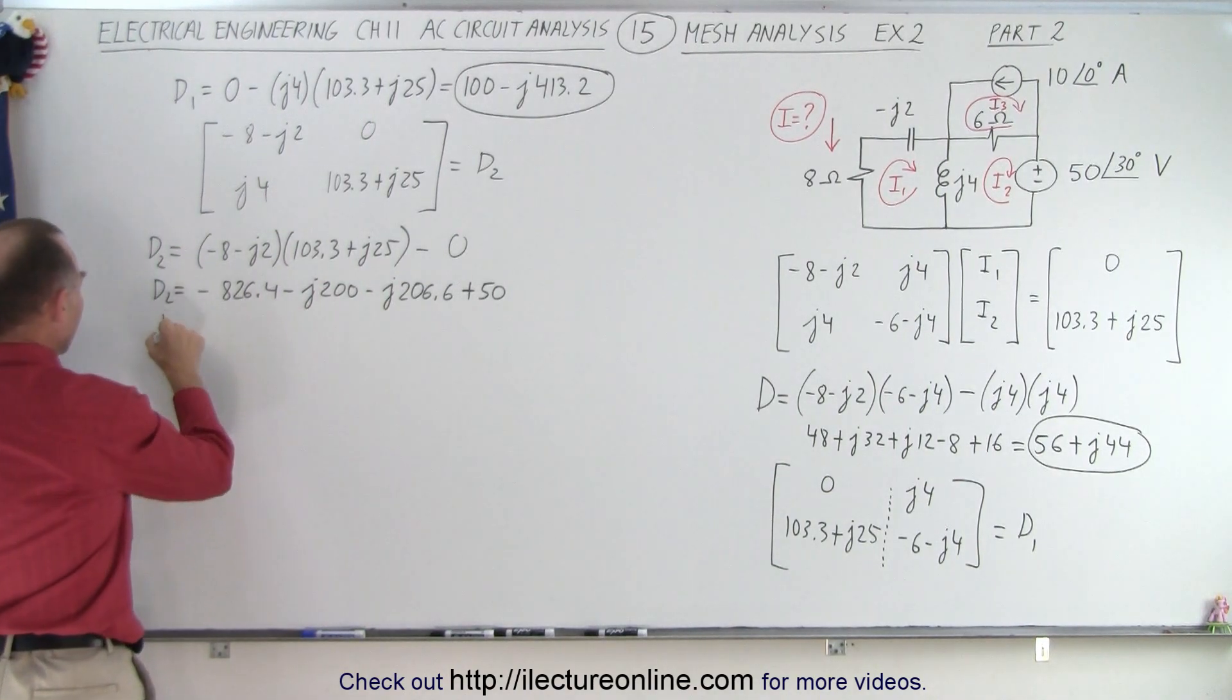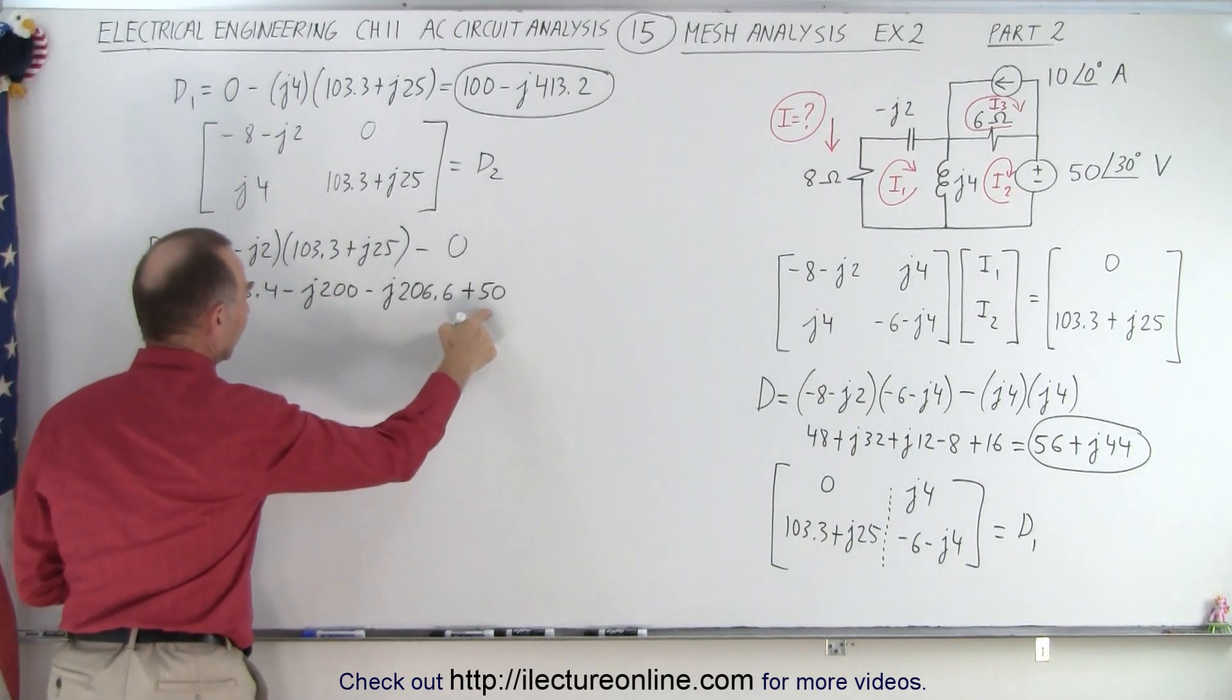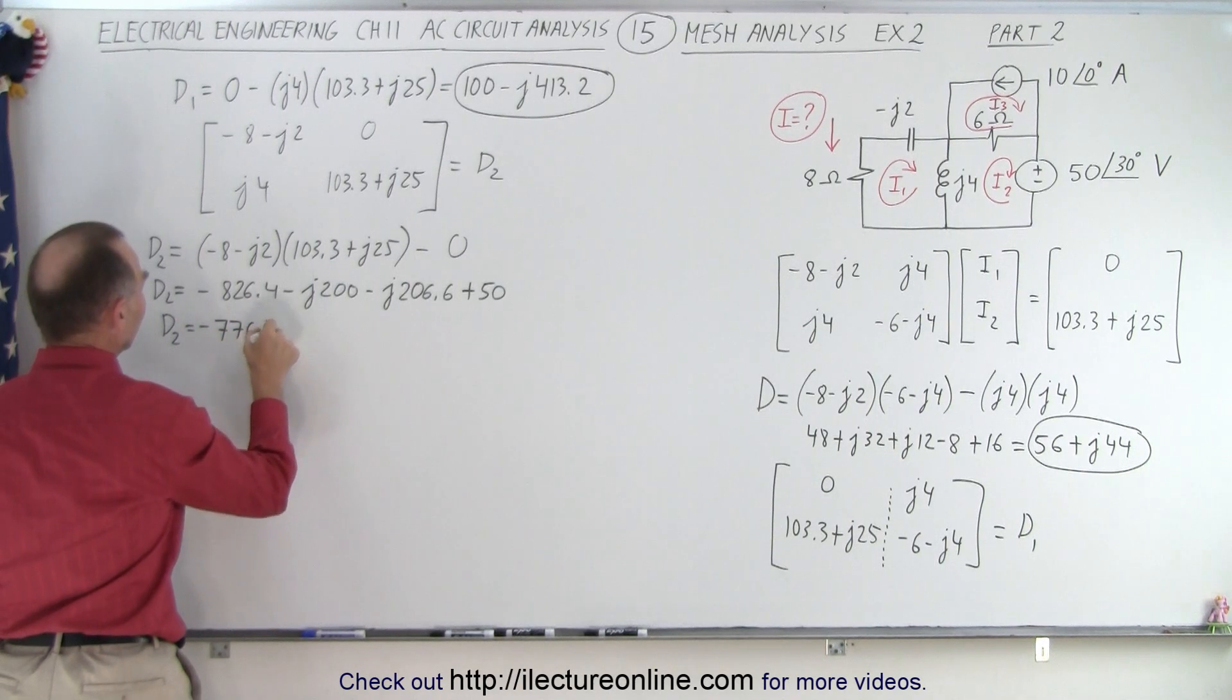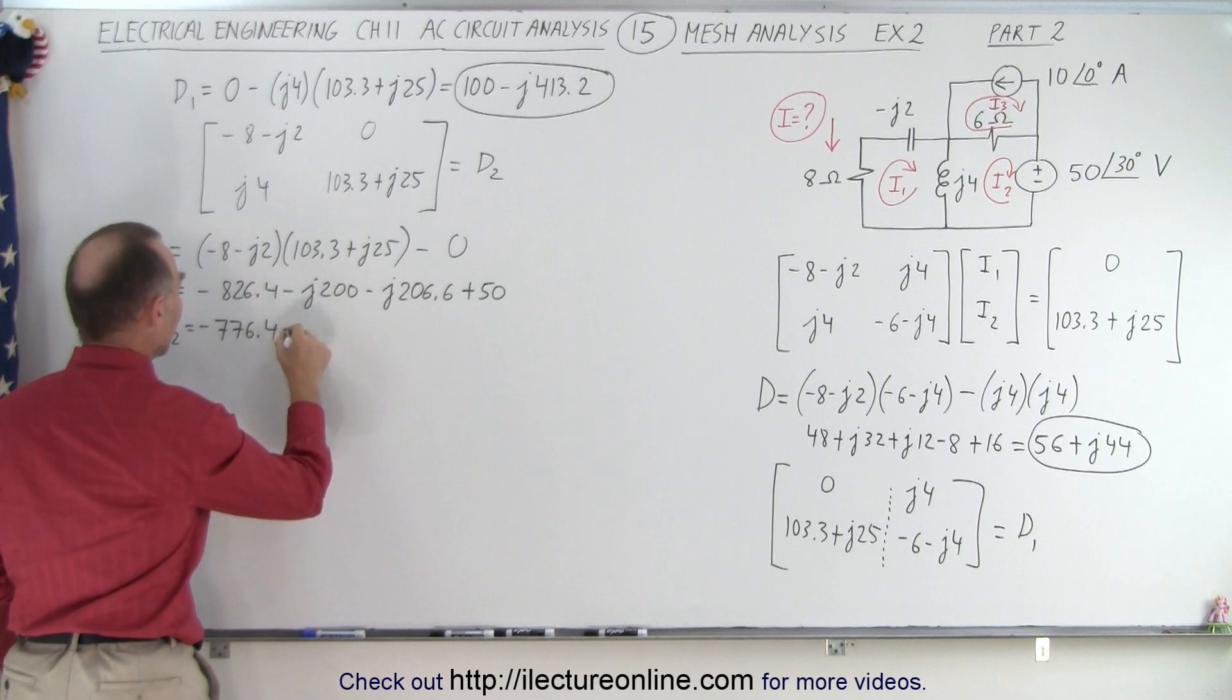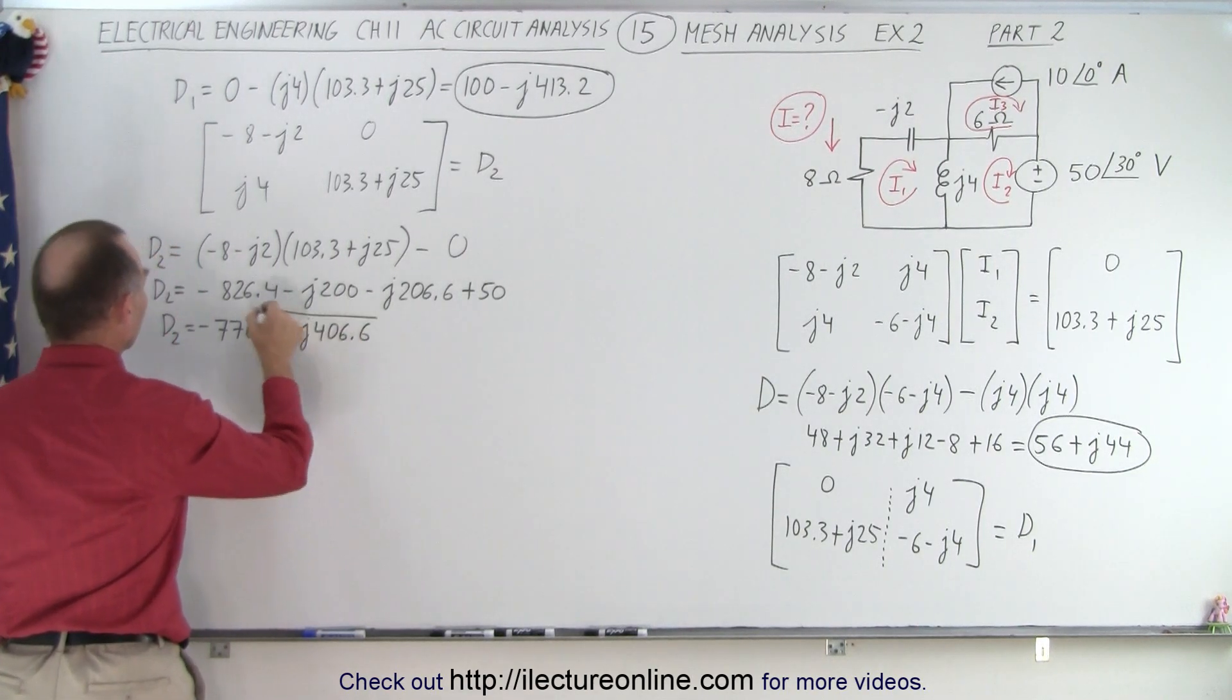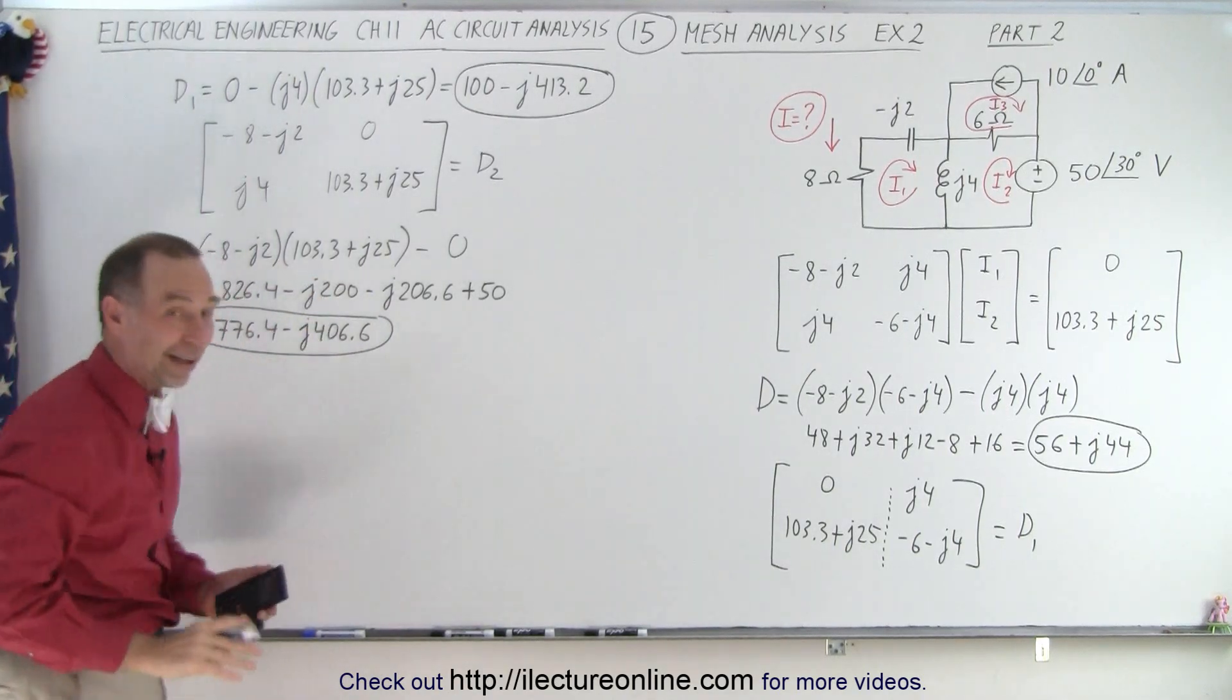Combining like terms, D2 is equal to this plus 50. That becomes a minus 776.4, and this becomes a minus J406.6. And there is the value for D2. Now, we're not going to use D2, but this is how we would find D2.